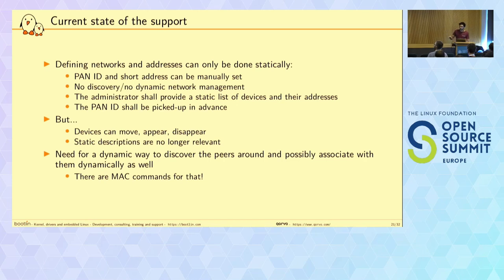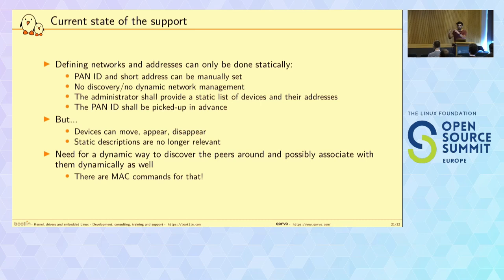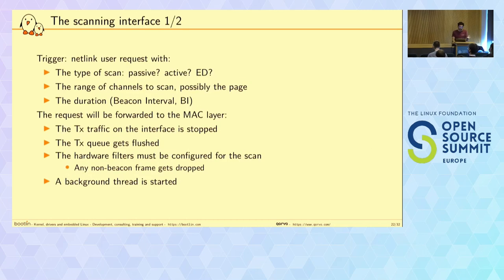The current Linux kernel implementation — before my large pile of patches — didn't allow dynamic network discovery. We couldn't create coordinators and there was no beaconing feature. You had to configure a static PAN ID beforehand, which is limiting. We prefer to be able to create a network directly in the field with dynamic interactions between devices. That's what these new MAC management commands are made for.